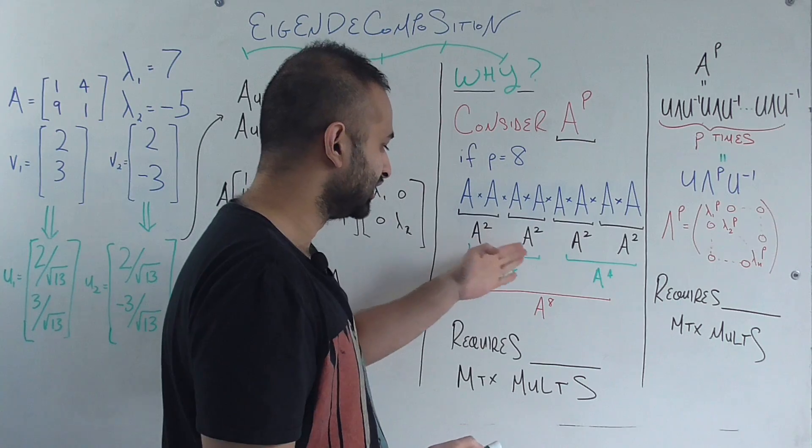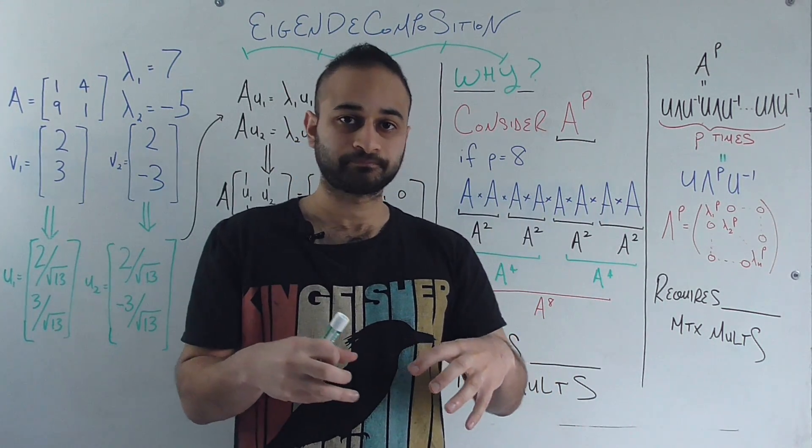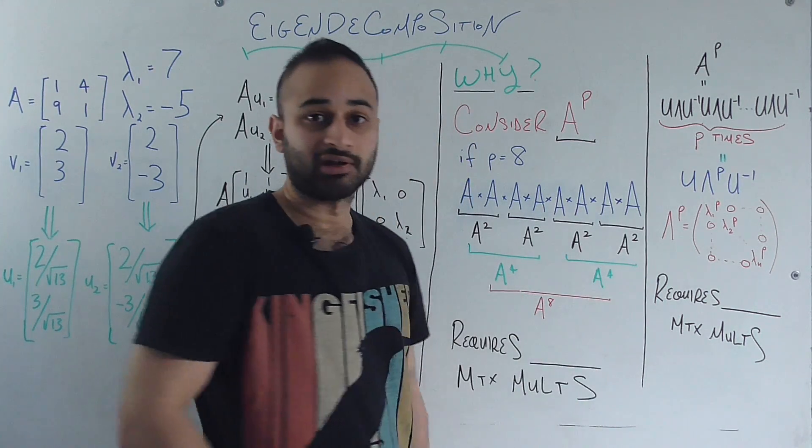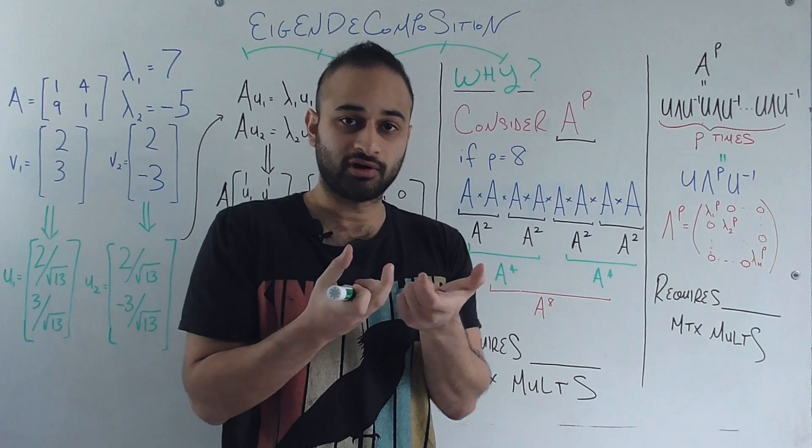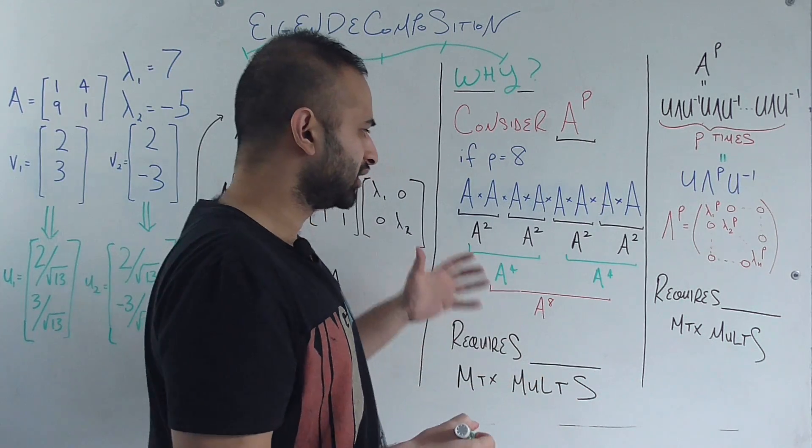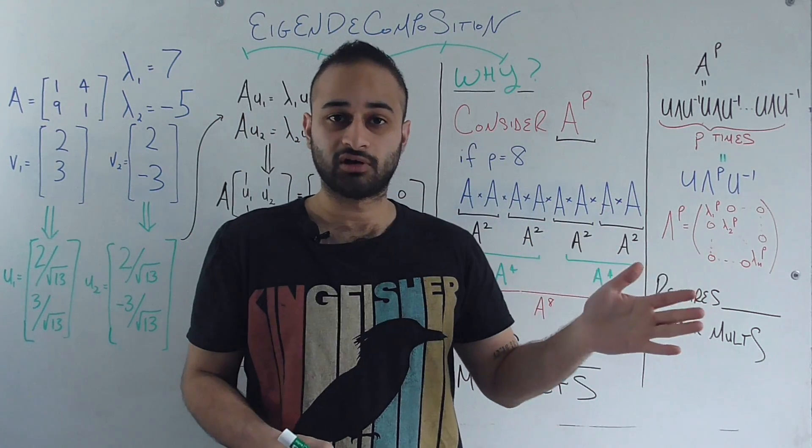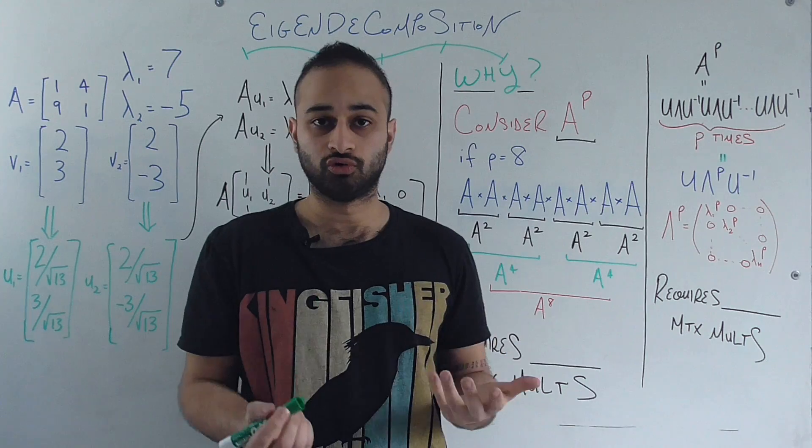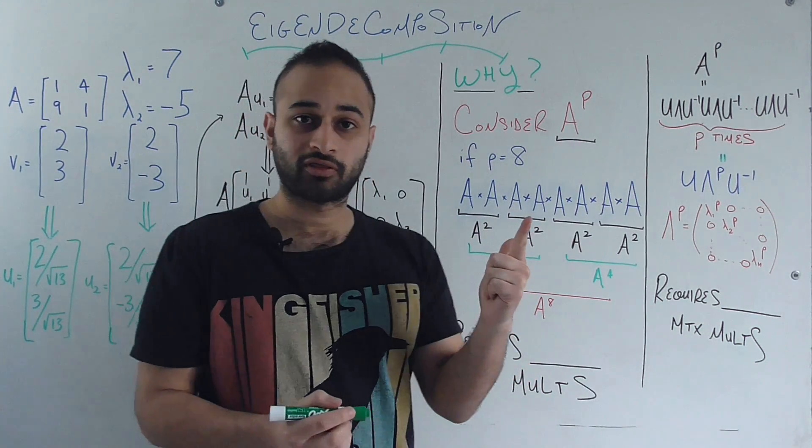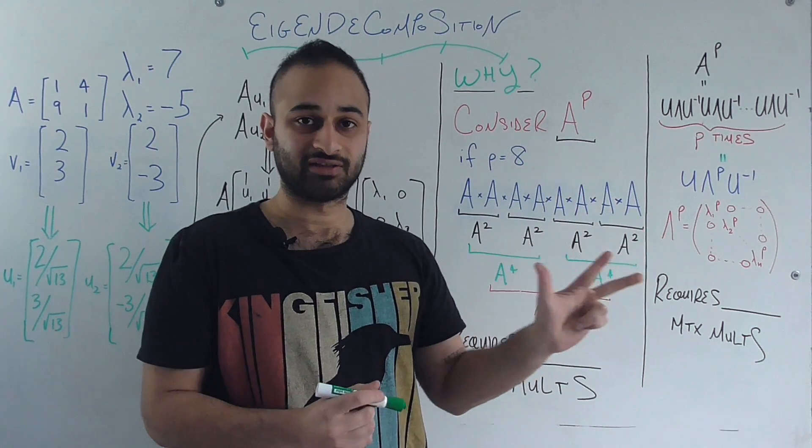So now the next step would be to compute A to the fourth by taking A squared and multiplying two of them together. So now we have A to the fourth here and A to the fourth here. The last step would be multiplying two of these A to the fourths together to get our final result of A to the eighth. Okay? So we were a little bit smart about it in the sense that we grouped things together so that we weren't doing seven multiplications. But how many multiplications did we actually have to do? We had to find A squared. Then we had to find A to the fourth. Then we had to find A to the eighth. So we had to do three multiplications in order to get this to happen.